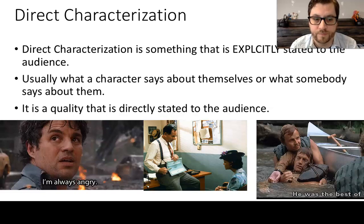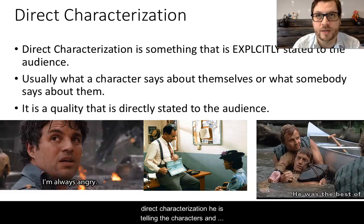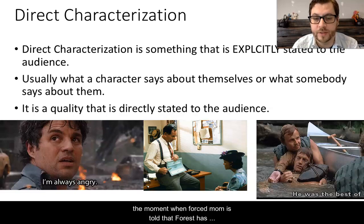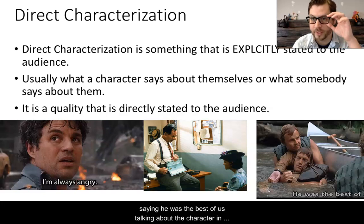Looking at the examples on the slide: in The Avengers, Bruce Banner tells everybody that he's always angry — that is direct characterization, he's telling the characters and the audience. In Forrest Gump, there's a moment when Forrest's mom is told by a doctor that Forrest has below-average intelligence — we are told that directly. And in Deliverance, Jon Voight's character says 'he was the best of us,' talking about another character. So we are being told this directly about these characters.